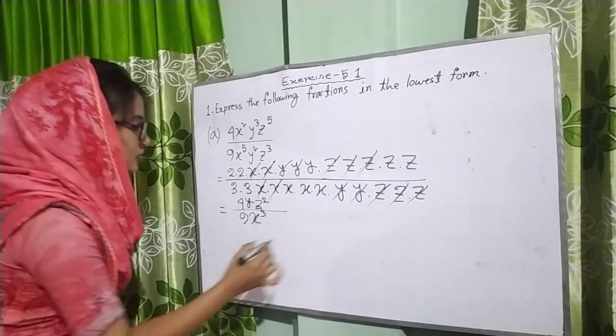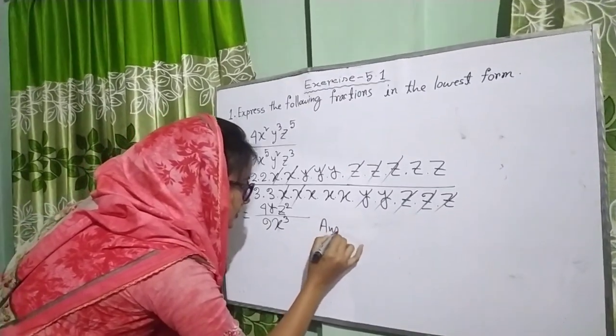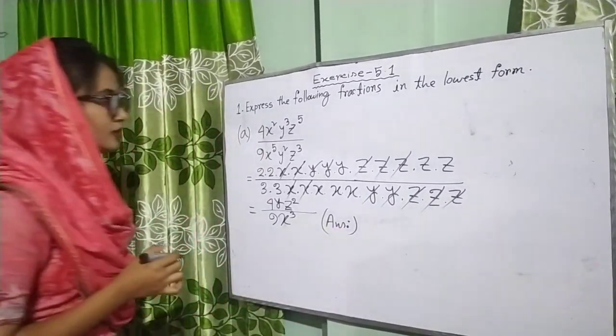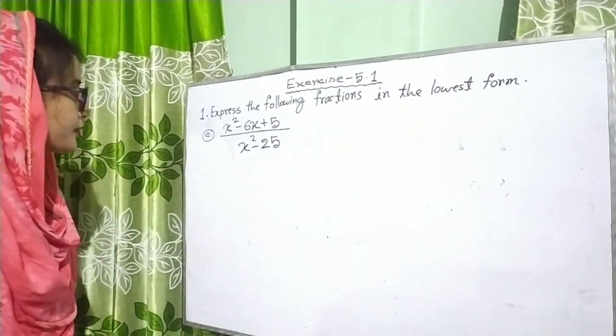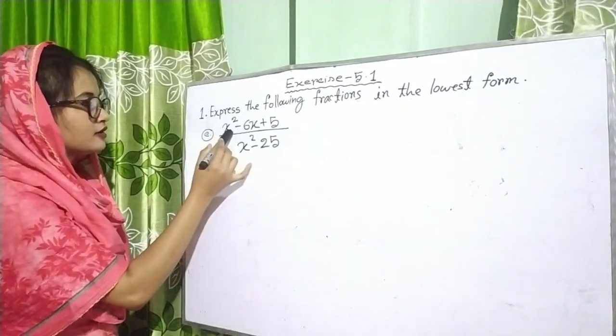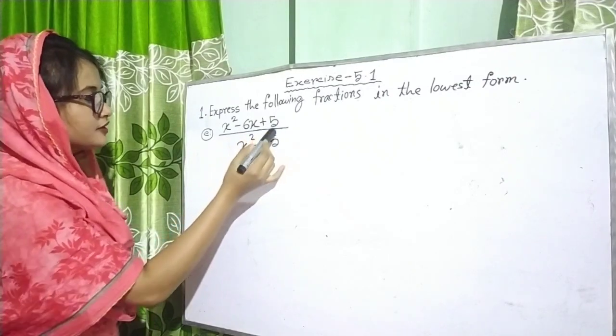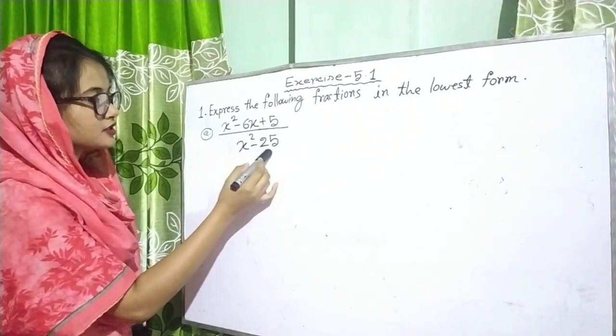So our next math is problem E. Here, x squared minus 6x plus 5 is divided by x squared minus 25.